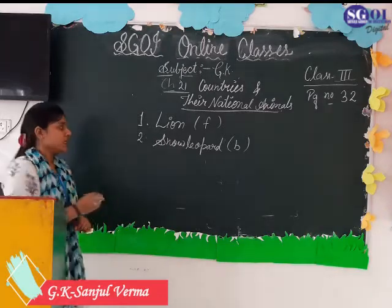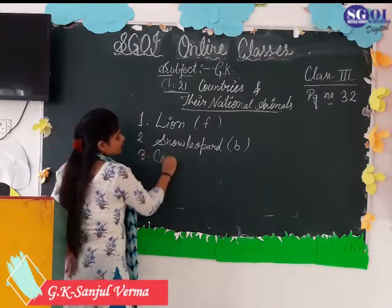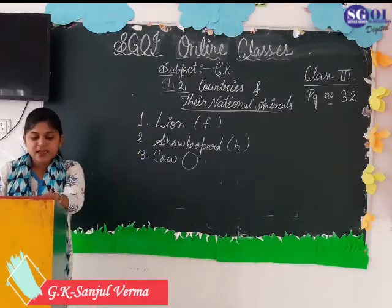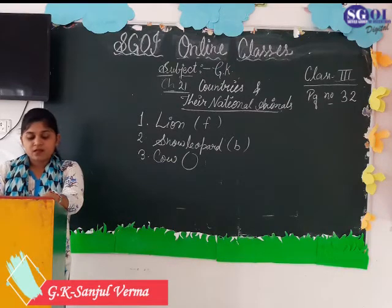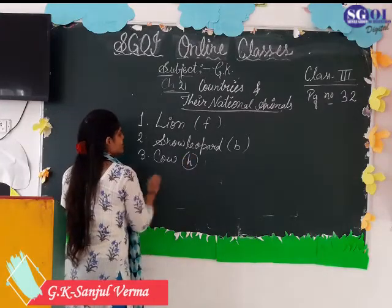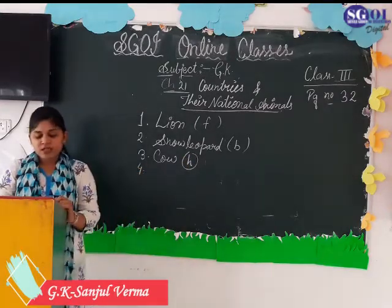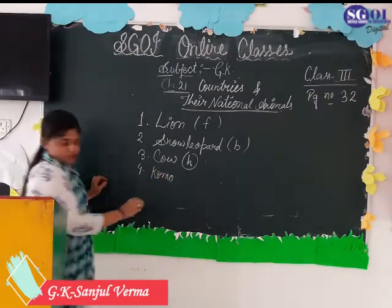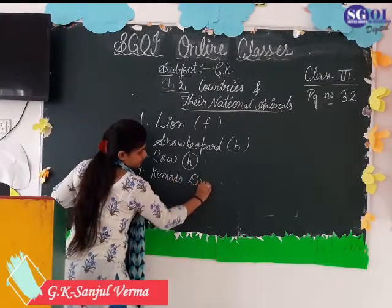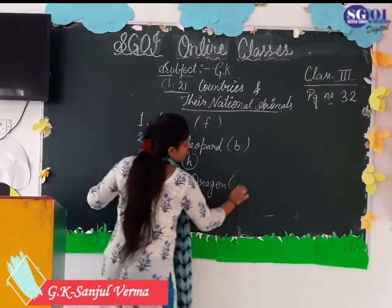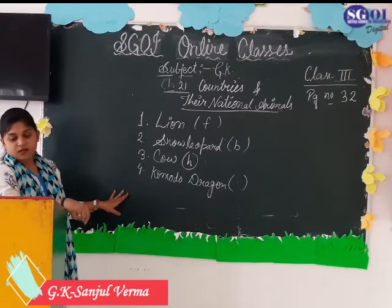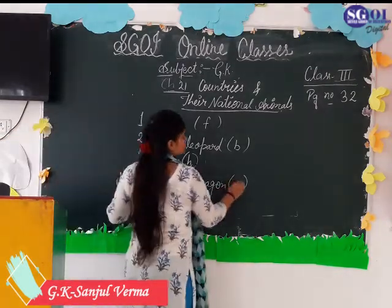Third is Cow. Cow is the national animal of Nepal. Write H in the circle. Now move to fourth. Fourth is Komodo Dragon. Komodo Dragon is the national animal of Indonesia. Write C in the circle.